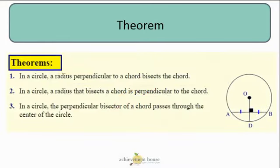Some theorems about chords. In a circle, a radius perpendicular to a chord bisects the chord. So if this AB is perpendicular to OD, then in fact the chord is broken up into two equal parts as well.